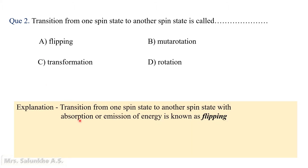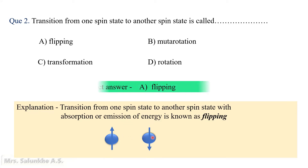Transition from one spin state to another spin state with absorption or emission of energy is known as flipping. There are two spin states: one parallel to the applied magnetic field and one anti-parallel. When transition from lower to higher energy occurs, there is absorption; from higher to lower, there is emission. That transition in spin state is known as flipping. Thus, the correct answer is flipping.